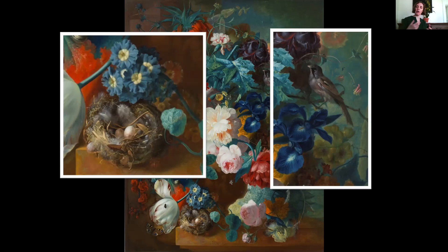You understand that much like the flowers are ephemeral — they bloom, they ultimately wilt and die — so too are birds and birds' eggs, which of course we hope will hatch into young birds which will ultimately fly away and go on to live their lives. There is this continuity of association across these various elements that pepper the composition, and that Van Oss is very deliberately grouping together in a single painting.